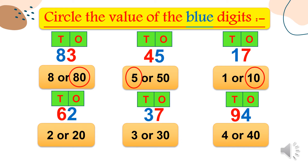Sixty-two: the blue digit is two. Two is in the ones place, so its value equals two — in ones, no zero. Next, thirty-seven: three is in tens, put a zero to get the value, so the value equals thirty. The last one: ninety-four, four is in the ones place — no zero — so its value equals four.